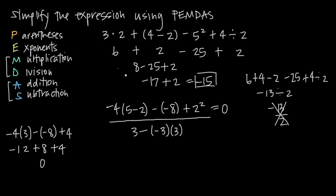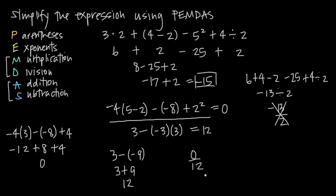For the denominator: no parentheses to simplify, no exponents. Moving to multiplication: negative 3 times positive 3 is negative 9, giving us 3 minus negative 9, which is the same as 3 plus 9, which equals 12. The denominator is 12. So the fraction simplifies to 0 over 12. Zero divided by 12 is 0, so 0 is our final answer.